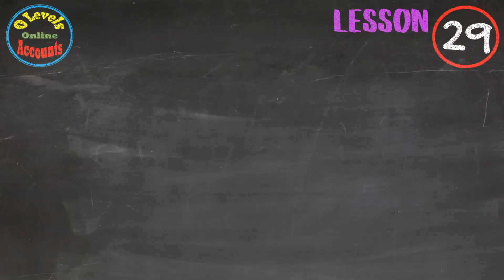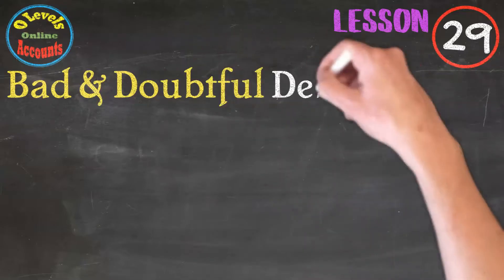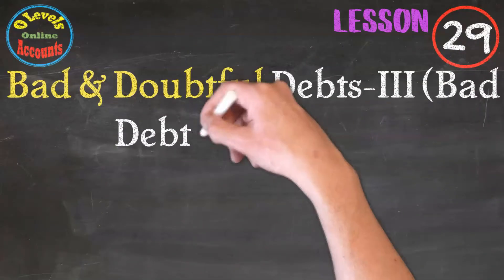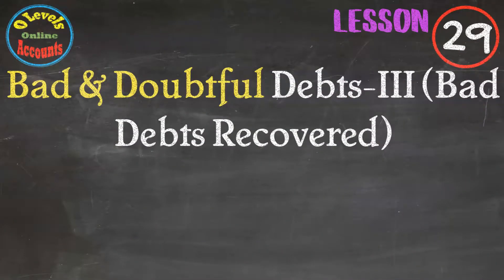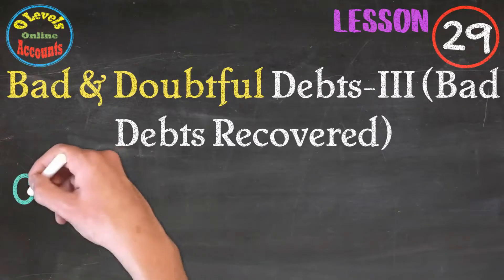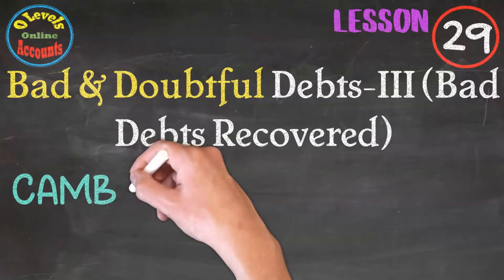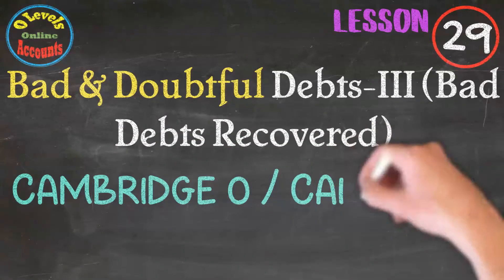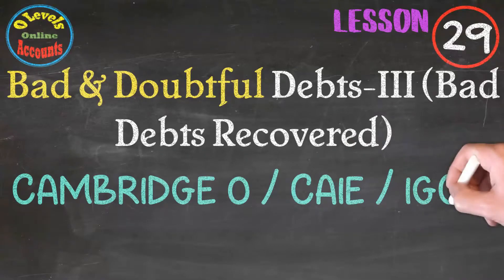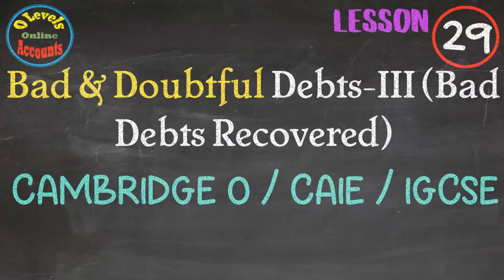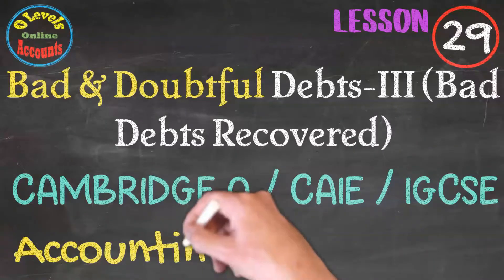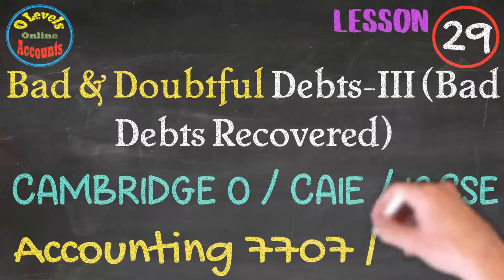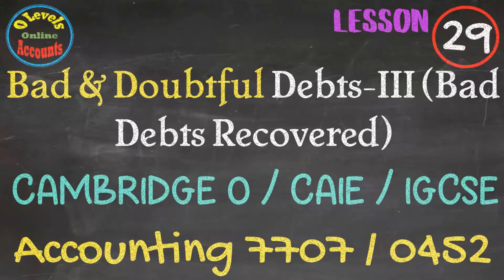Hi students. O-Levels Online presents the video lecture series for adjustments for financial statements. In this video, we'll discuss bad debts recovered. This video series is helpful for those students who are appearing in Cambridge O-Levels upcoming exams, either in June or November, through CAIE or IGCSE for accounting 7707 or 0452. Let's begin the lesson material.